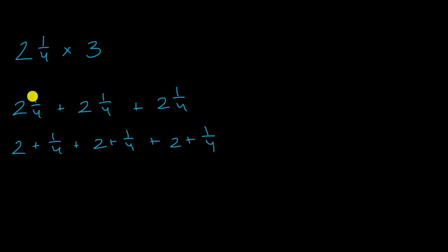All I did is I broke up each of the two and one-fourths into a two plus one-fourth, and then what I could do is I could add the whole number parts. Two plus two plus two is going to be equal to six